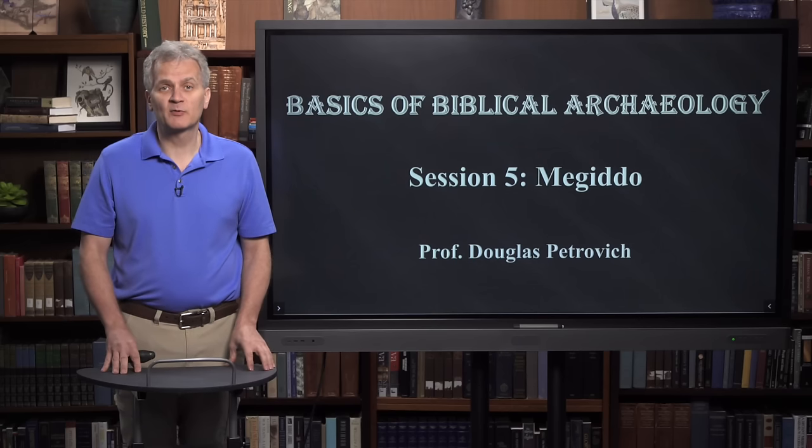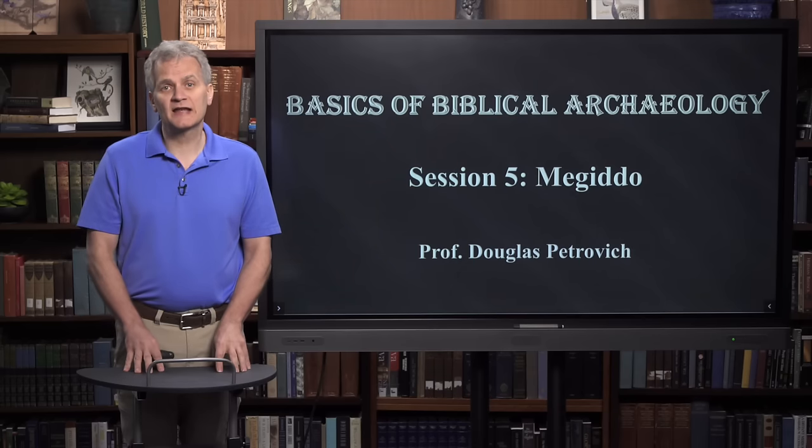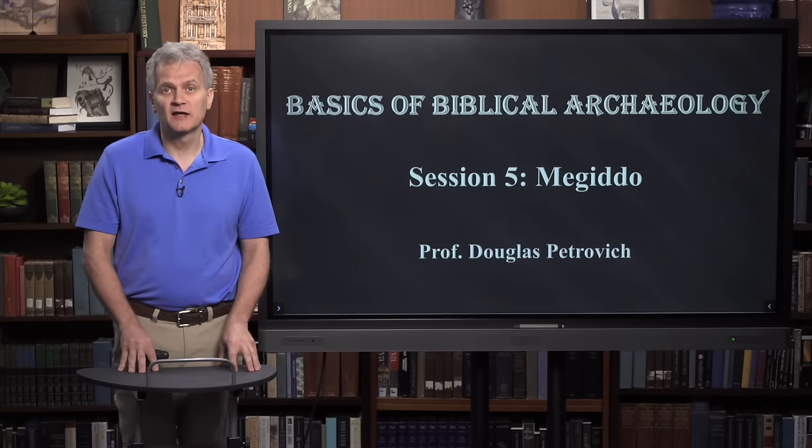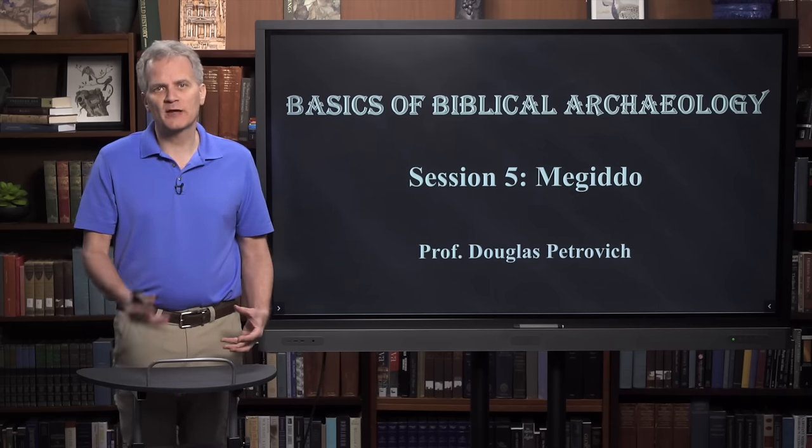Welcome to session five of Basics of Biblical Archaeology. Today we're going to look at the site of Megiddo, an extremely important city in the ancient Canaanite world — a powerful city that guarded the road from Egypt all the way into Mesopotamia. We know of Megiddo from the prophetic parts of the New Testament, where a great battle will take place in the future between Jesus and the forces of the world. We want to look at Megiddo both as a Canaanite site before the Israelites arrived, and during the Israelite period.